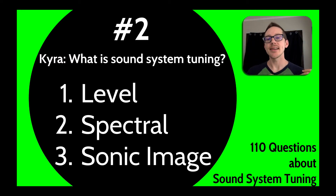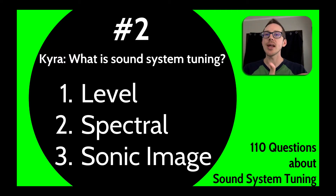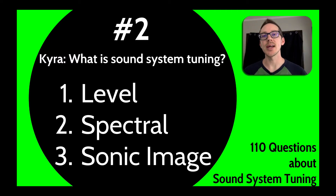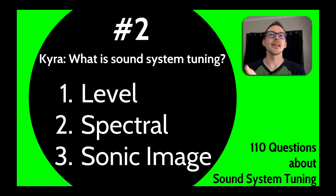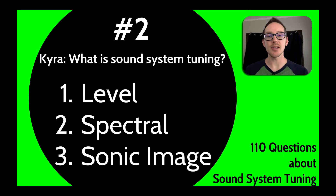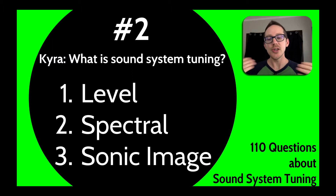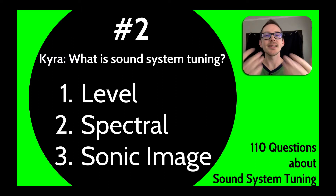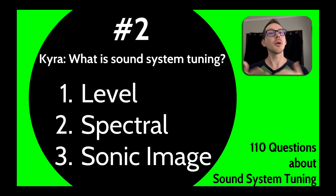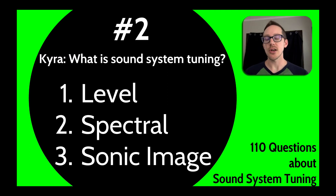Appropriate sonic image means that if an actor is upstage right, they should sound like they're coming from upstage right, and if they are downstage left, they should sound like they're coming from downstage left as much as possible. We know this is an ideal that will never be perfectly achieved, but this is our goal.